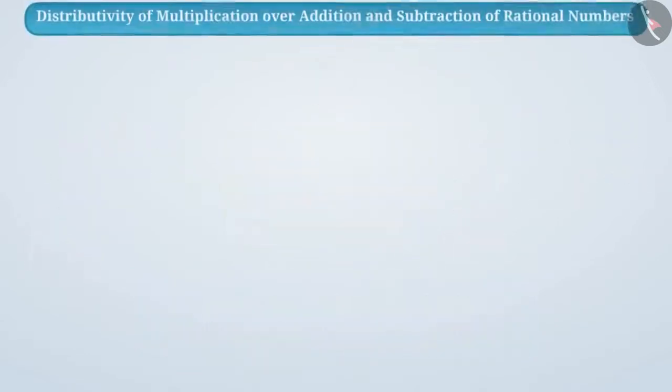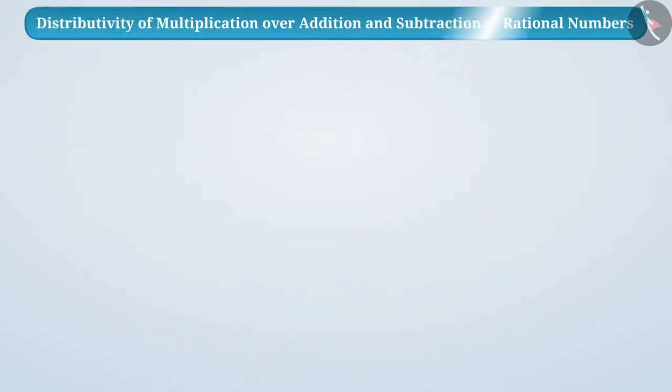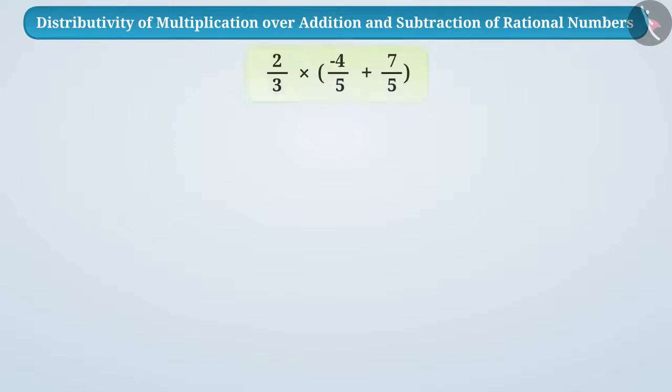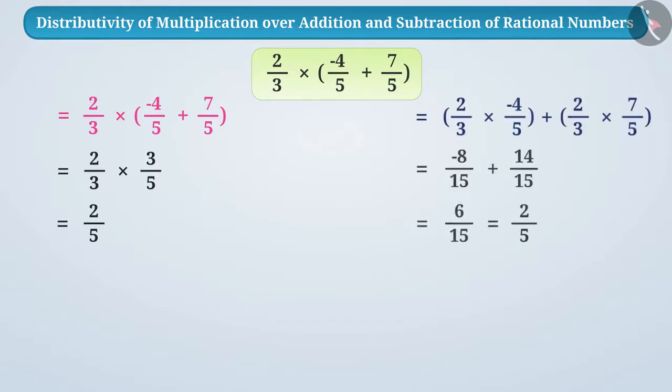Multiplication can also be distributed over addition in rational numbers. Let us understand this with an example. Suppose we want to multiply 2 by 3 by minus 4 by 5 plus 7 by 5. We will do it in this way or we will do it in this way. We are getting the same result in both cases.